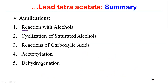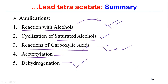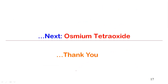In summary, lead tetraacetate has five important synthetic applications: (1) oxidation of alcohols to the corresponding carbonyl compound — aldehyde or ketone; (2) cyclization of saturated alcohols having a delta hydrogen to give cyclic ethers; (3) decarboxylation of carboxylic acids, or lactonization when a double bond is adjacent to the carboxylic group; (4) alpha-acetoxylation of carbonyl derivatives; and (5) dehydrogenation to prepare nitriles and quinones. The next topic will be osmium tetroxide.